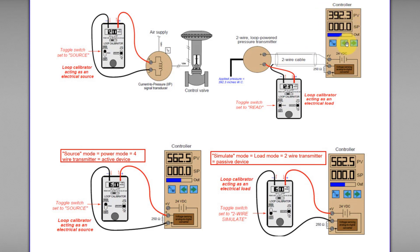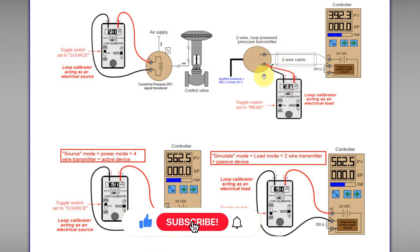The power source must be provided by the transmitter, the controller, or an external power source. In this case, the controller will act as an electrical source to provide the power to power the whole load. You can see there is a wire connected to the positive V, which stands for positive voltage source. This positive V is internally connected to the controller's internal power source. That's why this terminal will act as an electrical source, and the internal power will power the whole load — so this transmitter and the signal calibrator here will act as electrical load.